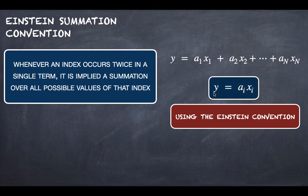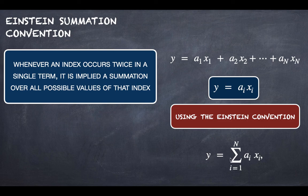As y equals aᵢxᵢ, there is a summation here where we will not write it. So actually this is y equals the summation of aᵢxᵢ with i going from 1 up to n.